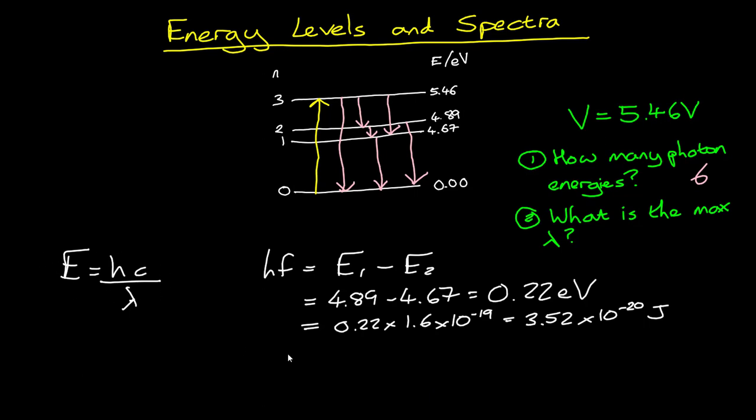Finally, we know that this photon energy can also be written as hc over lambda. So therefore, lambda is going to be hc divided by our photon energy, which we've been writing as hf. So h, the Planck constant, 6.63 multiplied by 10 to the power of minus 34, multiplied by the speed of light in a vacuum, 3.00 times 10 to the power of 8, divided by our photon energy, which we've worked out to be 3.52 times 10 to the power of minus 20 joules. And this gives us a maximum wavelength of 5.65 times 10 to the power of minus 6 metres or 5.65 micrometres.